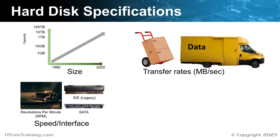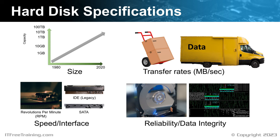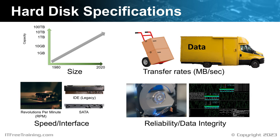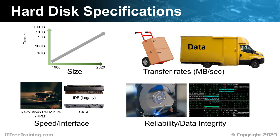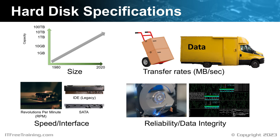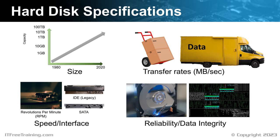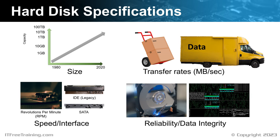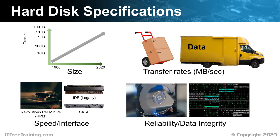This brings us to the next consideration: reliability and data integrity. The hard disk manufacturer will give specifications indicating how long the hard disk is likely to last. Some manufacturers design different hard disks for different purposes — for example, hard disks with low use may be designed to use less power, while hard disks constantly under load may be designed to last longer but cost more. If you are using a hard disk in a data center, you will want a more reliable hard disk. The manufacturer may also release a failure rate, giving an indication of the probability of the hard disk failing, generally given as a percentage per year.